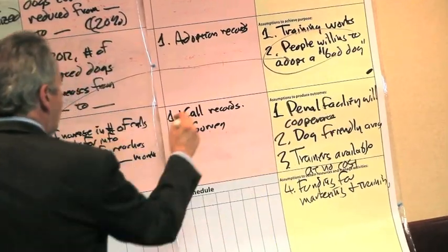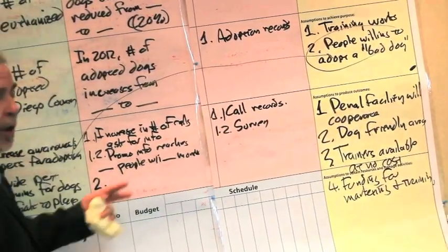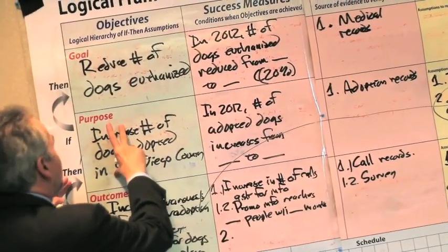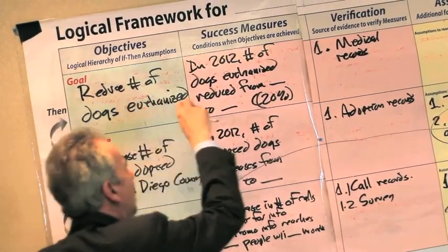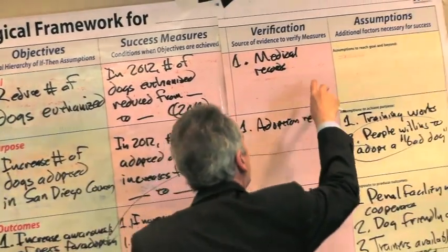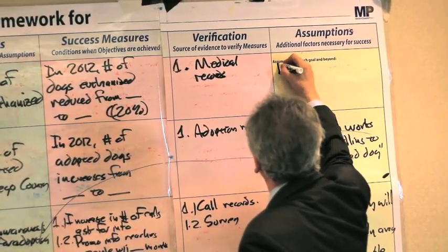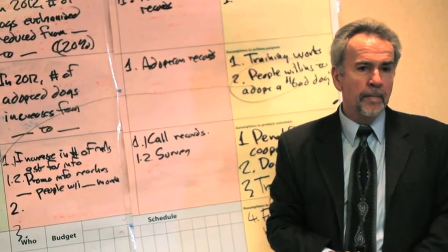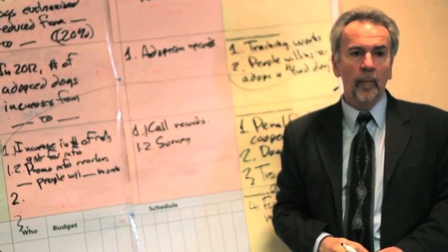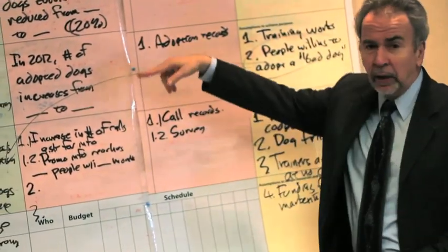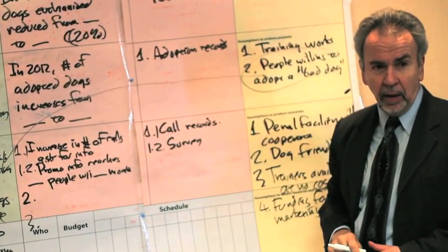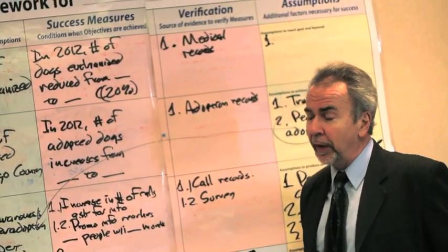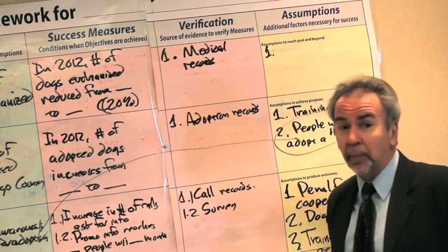So let's take a look. I think we've got good assumptions there. We'll come back and test a few of those. If we increase the number of dogs adopted in San Diego, we can reduce the number euthanized, assuming there's no change in the euthanization policies.